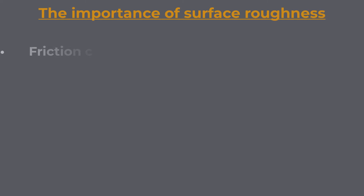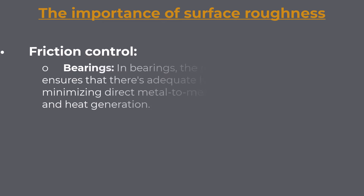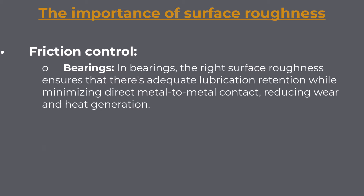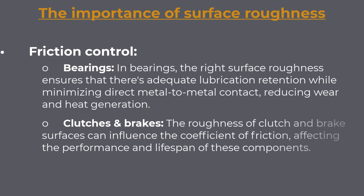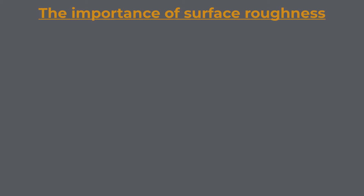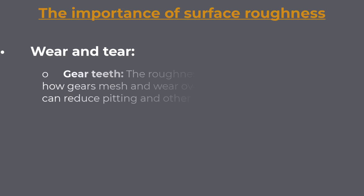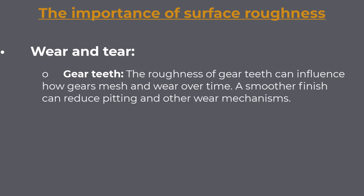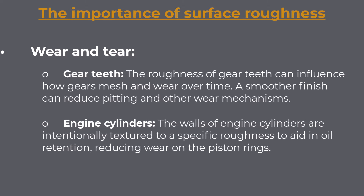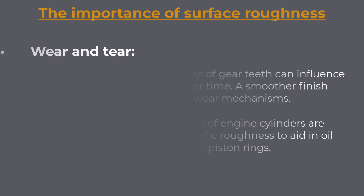The importance of surface roughness: Understanding and controlling surface roughness is vital for several reasons. Friction control — in bearings, the right surface roughness ensures adequate lubrication retention while minimizing direct metal-to-metal contact, reducing wear and heat generation. For clutches and brakes, the roughness of the surfaces can influence the coefficient of friction, affecting the performance and lifespan of these components. Wear and tear — the roughness of gear teeth can influence how gears mesh and wear over time; a smoother finish can reduce pitting and other wear mechanisms. Engine cylinder walls are intentionally textured to a specific roughness to aid in oil retention, reducing wear on the piston rings.